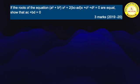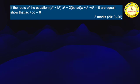The question is like this: if the roots of the equation (a² + b²)x² + 2(bc - ad)x + (c² + d²) = 0 are equal, show that ac + bd = 0. This is a 3-marks question, given in the departmental model question paper of 2019 and 2020.